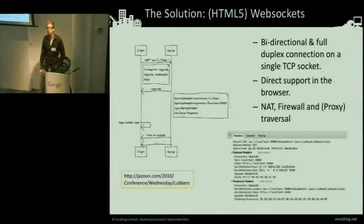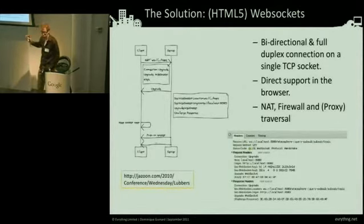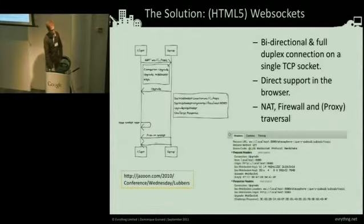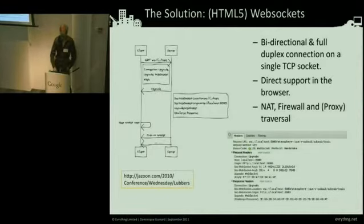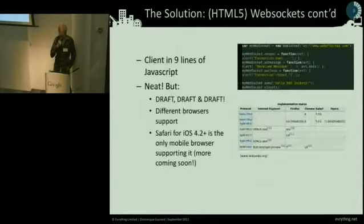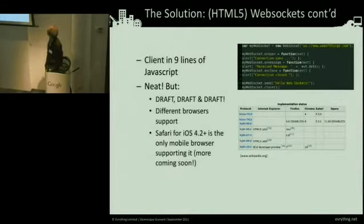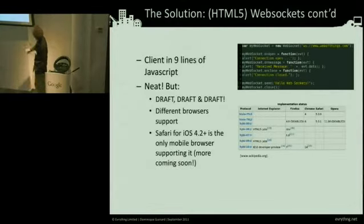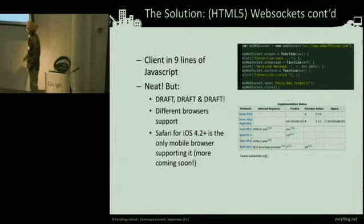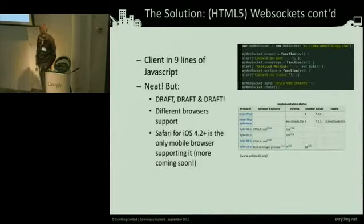This is what happens in a Chrome browser — you do an upgrade, which is fully HTTP standard, then you're ready to go with WebSockets. There's direct support in the browser. It's almost firewall and proxy transversal, which solves many problems for us dealing with firewalls and NAT. You can write a client in nine lines of JavaScript: open a connection, handle an onmessage event callback, handle connection close, and to send a WebSocket message it couldn't be easier. Very neat.